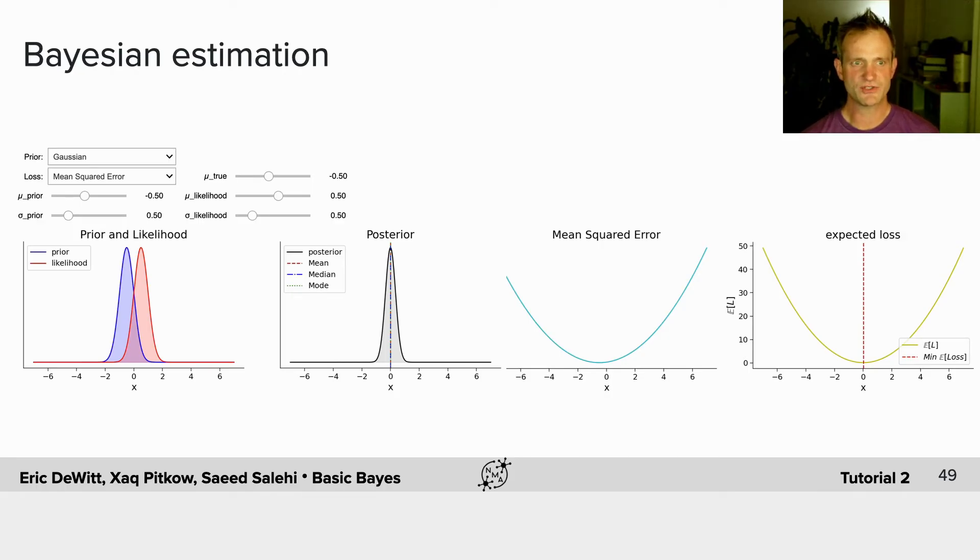With Bayesian estimation, you're going to be able to combine different priors with a Gaussian likelihood to produce different posteriors, some of which will be asymmetric, some of which will be multimodal.